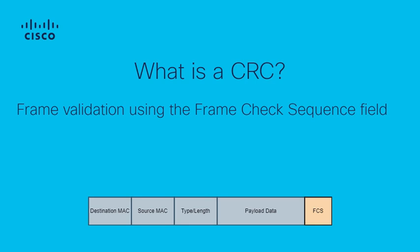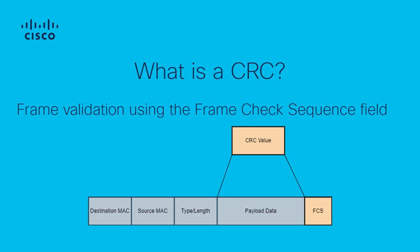A CRC, or Cyclical Redundancy Check, is a verification performed by a switch after receipt of a frame. Using an algorithm, the switch calculates the CRC for the frame and compares that to the value in the FCS, or Frame Check Sequence, field in the frame's trailer. Matching values validate that the payload in the frame has not been corrupted during transmission.